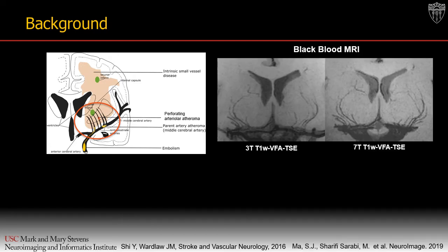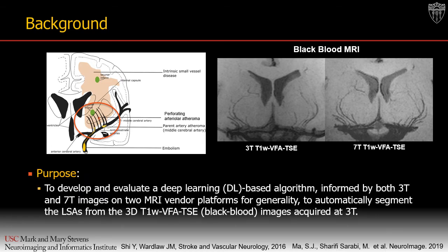Recently, black blood MRI techniques have been proposed to visualize LSAs with submillimeter spatial resolution using 3D turbo spin echo with variable flip angles at clinical field strength. In this study, we developed and evaluated a deep learning-based algorithm informed by both 3Tesla and 7Tesla images on two MRI vendor platforms for generality to automatically segment the LSAs from the 3D black blood images.